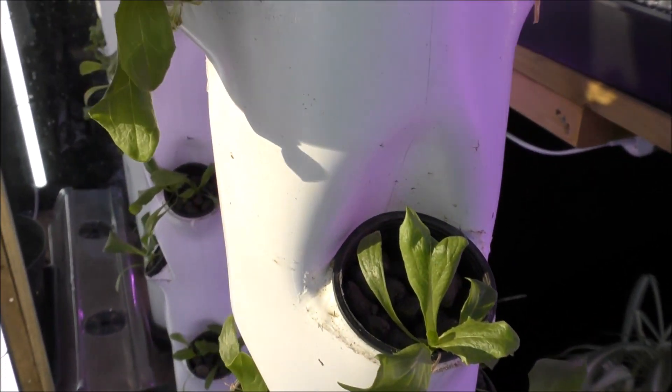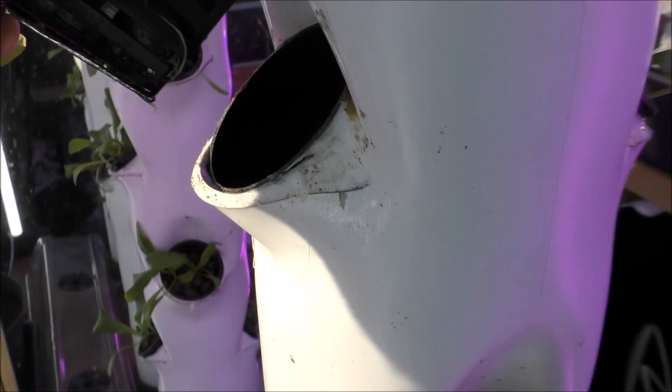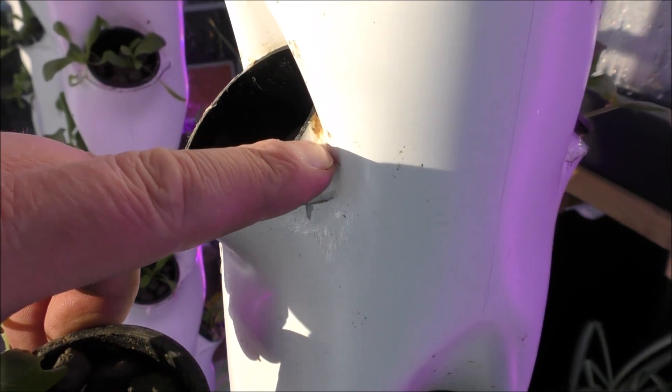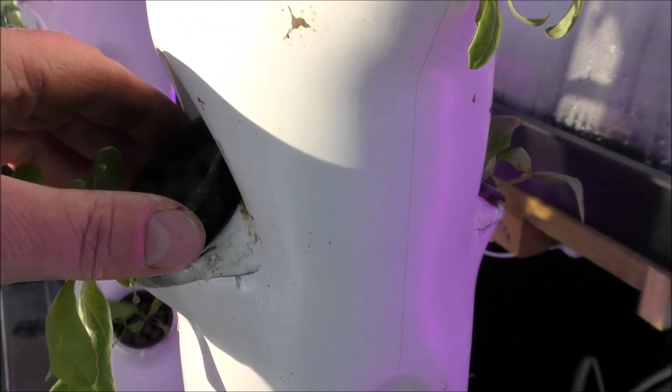I'll just give you a close up on the tower as it is now. Let's take this pot out. See the roots are starting to come through there, and I've sealed this up with white silicone. Strictly speaking it didn't really need sealing up, but I just thought I would do it just for neatness.